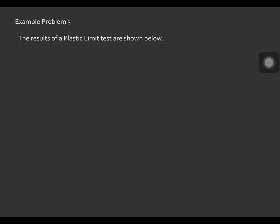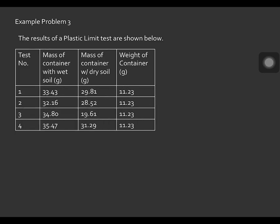For example problem number 3, the results of a plastic limit test are shown below. There are 4 plastic limit tests conducted. The mass of container with wet soil in grams are: 33.43, 32.16, 34.80, and 35.47. After the test, the soil was oven dried, and the mass of container with dry soil in grams are: 29.81, 28.52, 98.61, and 31.29.